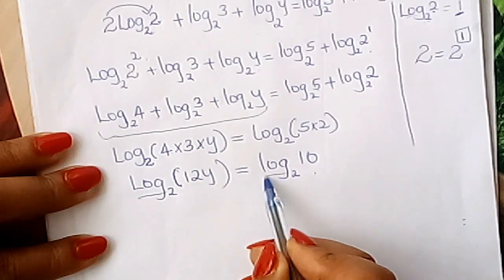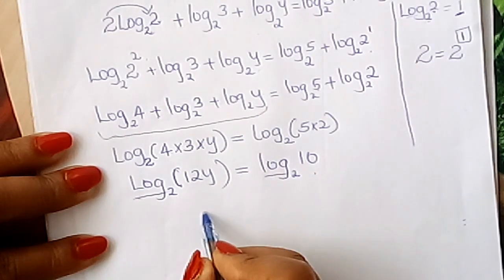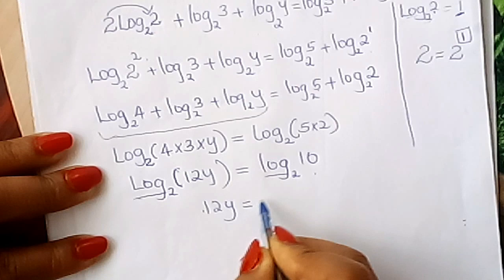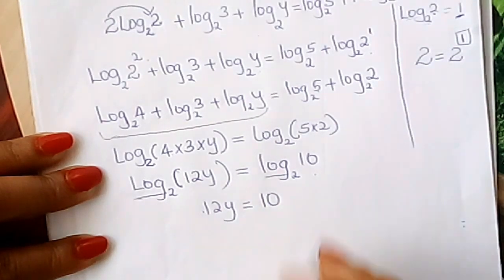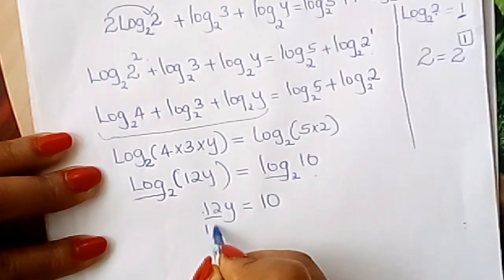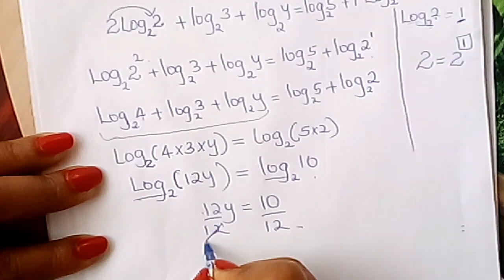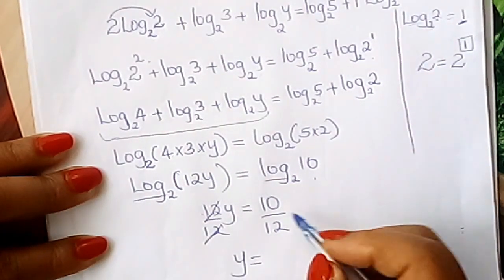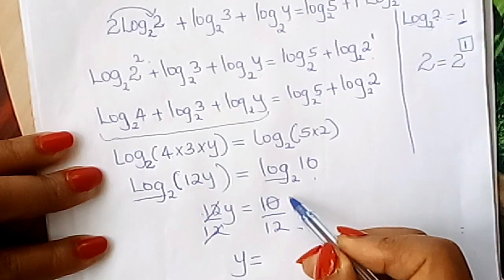Ignore the logs to base 2. Ignore the logs now. You end up with 12y = 10. Drop out of the logs. And therefore, divide by 12, divide by 12. That cancels out. And therefore...